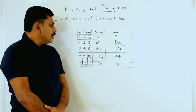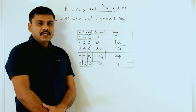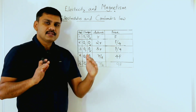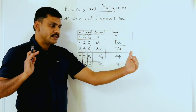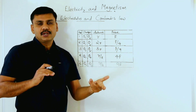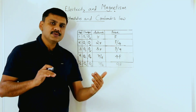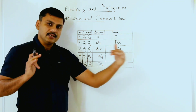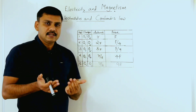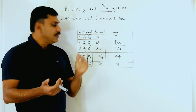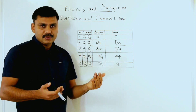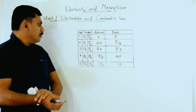Here I am explaining how the Coulomb force changes when the separation between the charges changes. When the separation between the charges is increased, the force of repulsion or attraction will be reduced. When the charges come close, the force of attraction or repulsion increases. I am explaining how distance increase or decrease affects the Coulomb force, shown in this table. The first case is: